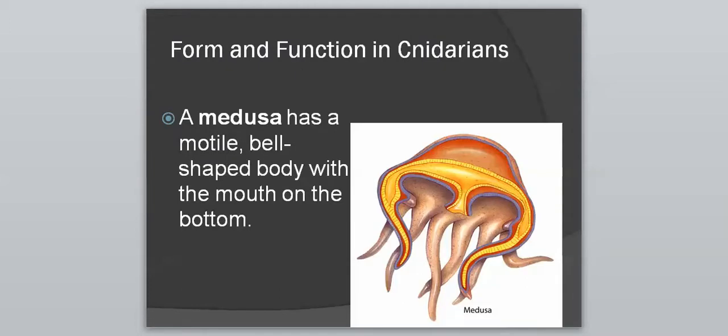Medusa is motile, meaning it can move. It has a bell-shaped body with a mouth at the bottom. This looks more like a jellyfish, which is going to be an example of this group — the jellyfish more or less has the medusa body shape that we know of.